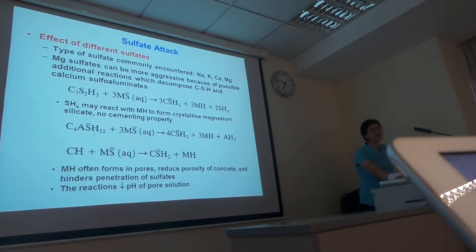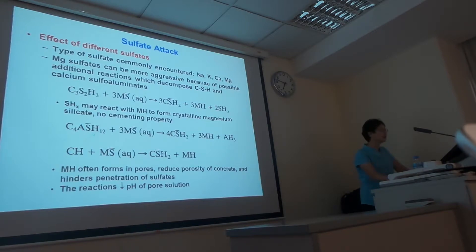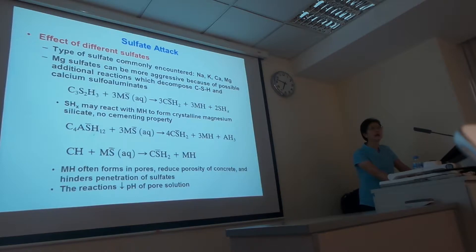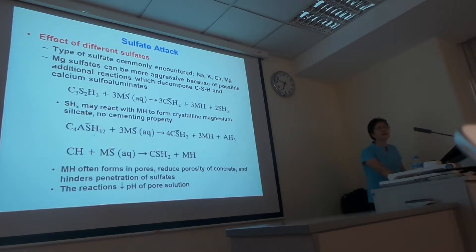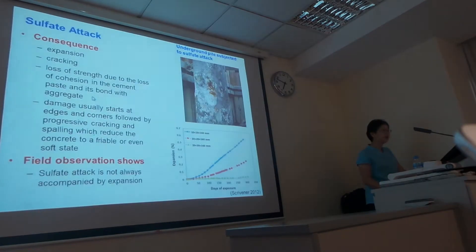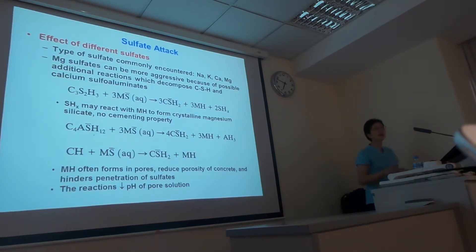The sulfate attack on concrete also depends on what type of sulfate is involved. Commonly encountered types include sodium sulfate, potassium sulfate, calcium sulfate, and magnesium sulfate. Comparing these, magnesium sulfate has more significant effects on the concrete compared with other types of sulfates. The reason is that magnesium sulfate not only affects calcium hydroxide, but also calcium silicate hydrates (C-S-H) and monosulfate aluminates.